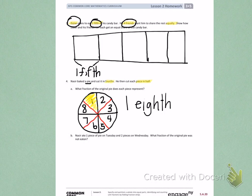Nasir ate one piece of pie on Tuesday and two pieces of pie on Wednesday. What fraction of the original pie was not eaten?